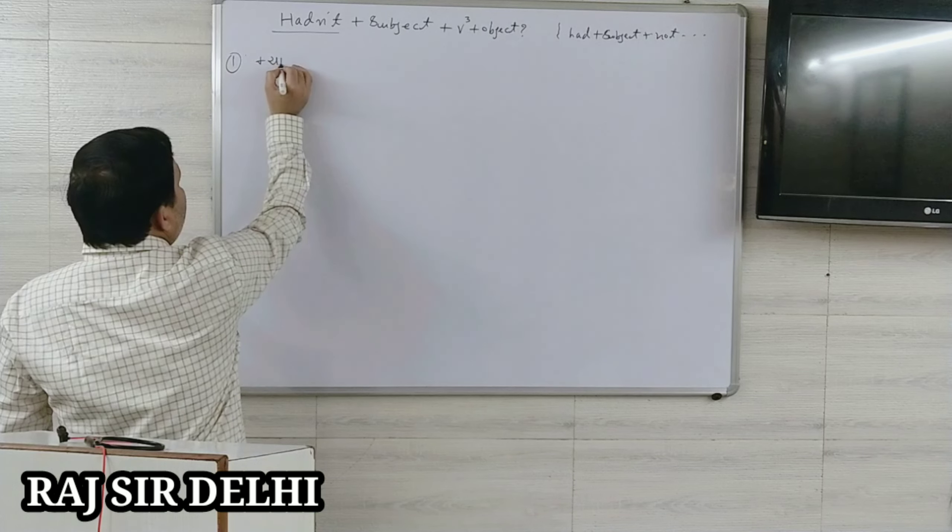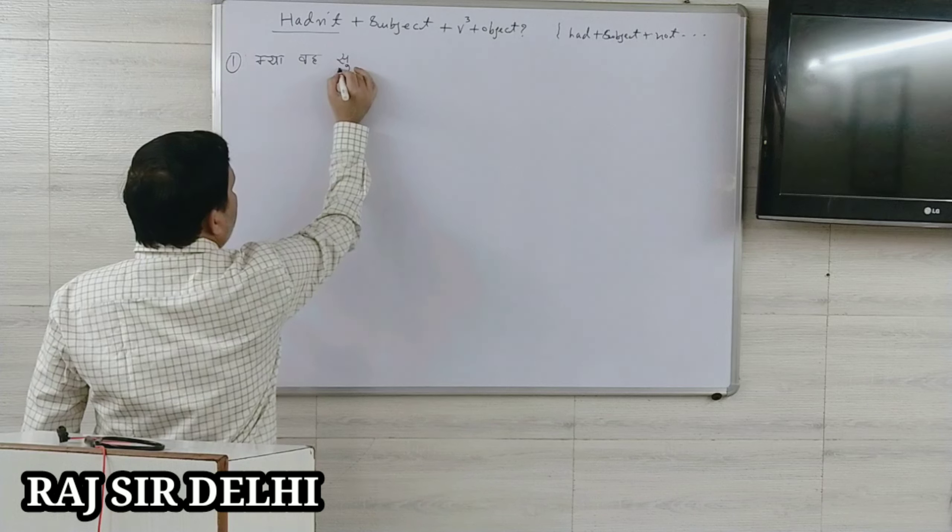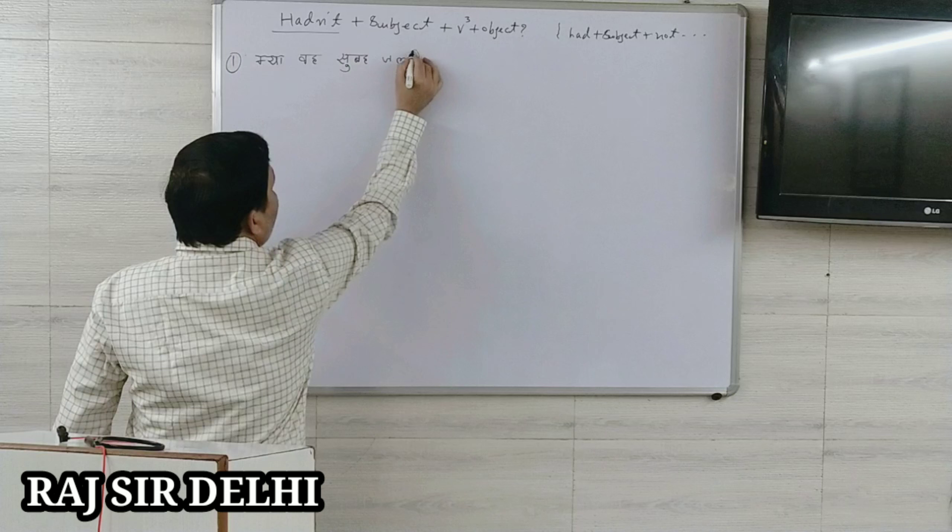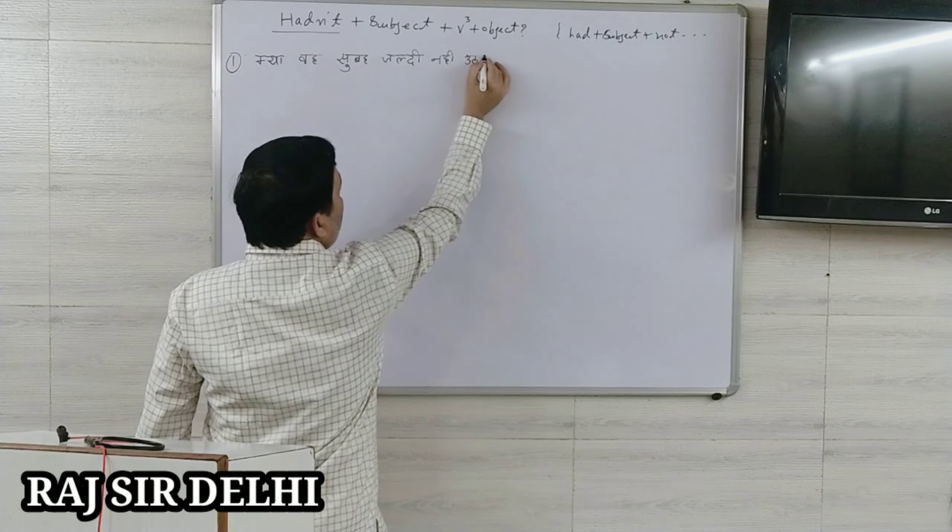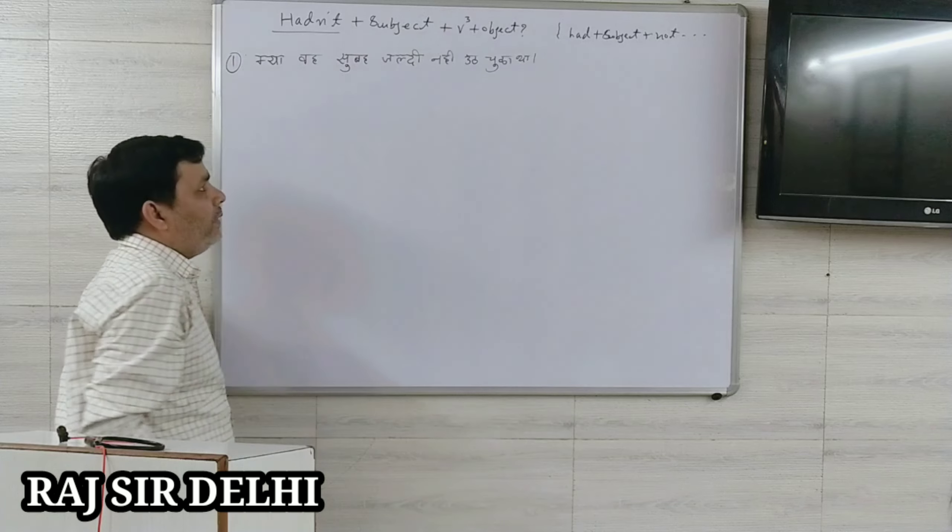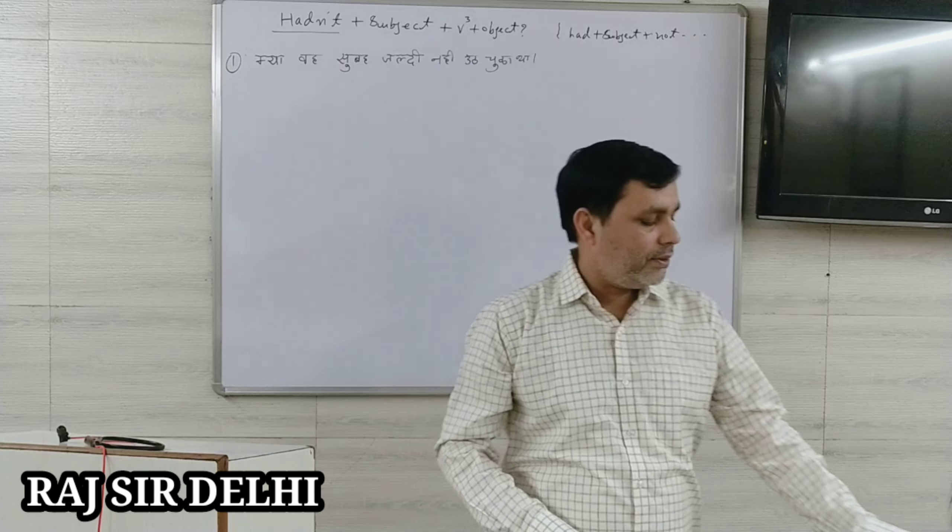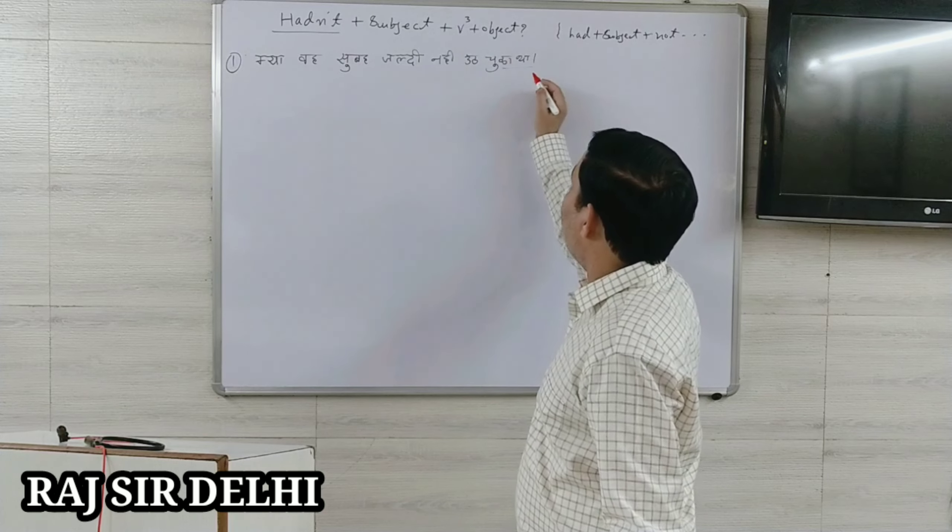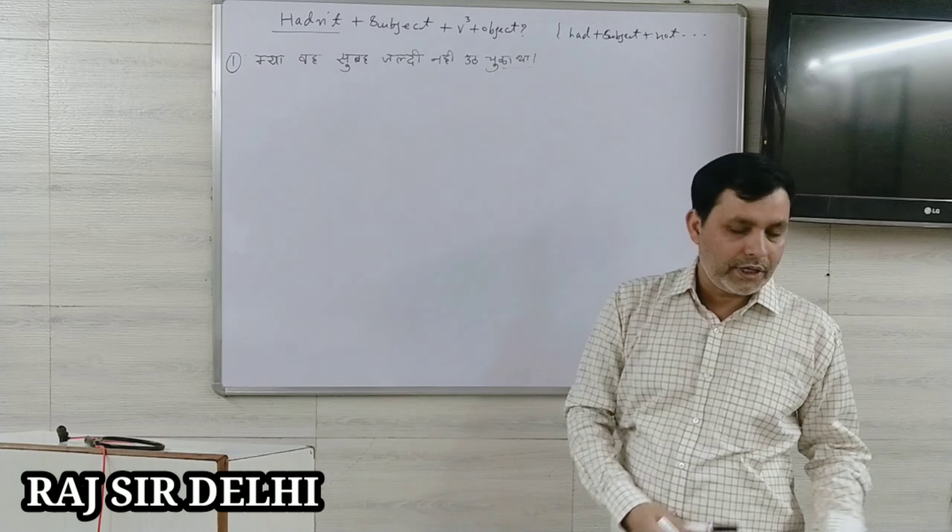So let's start. What is the first sentence? Kya wah subah jaldi uth chuka tha? Kya wah subah jaldi nahi uth chuka tha? First of all, let's identify the sentence of which tense it is. Dear students, the last verb is tha, which means it is past perfect tense.